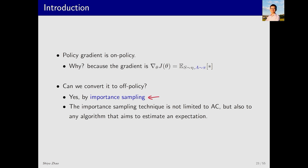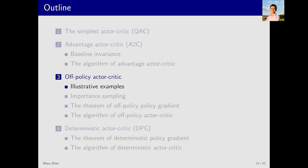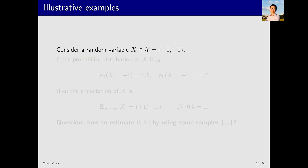It is important to note that although importance sampling is introduced in this lecture, it is not limited to the actor-critic method. In fact, any algorithm that requires calculating an expectation can be combined with importance sampling. This includes methods like Monte Carlo or temporal difference methods. First, let's consider some intuitive examples.